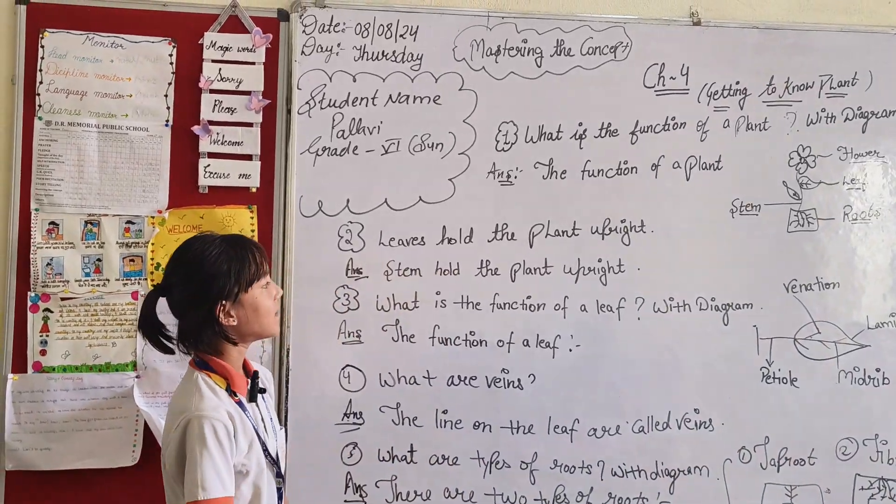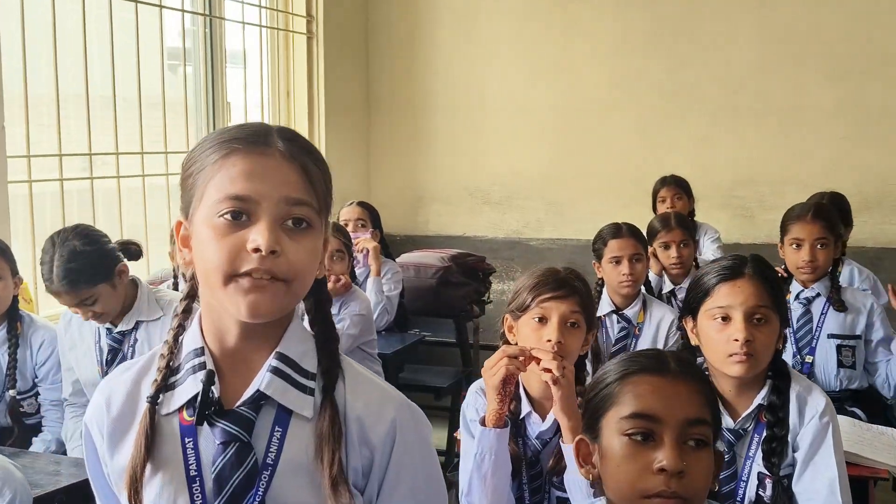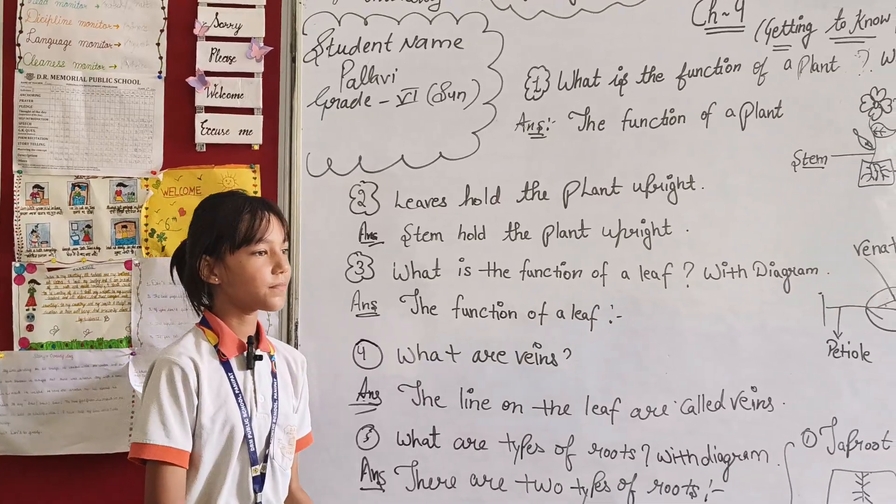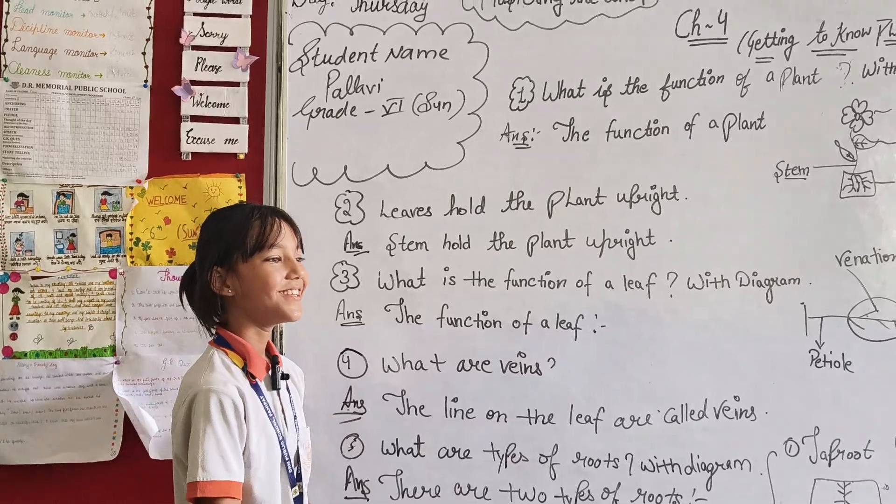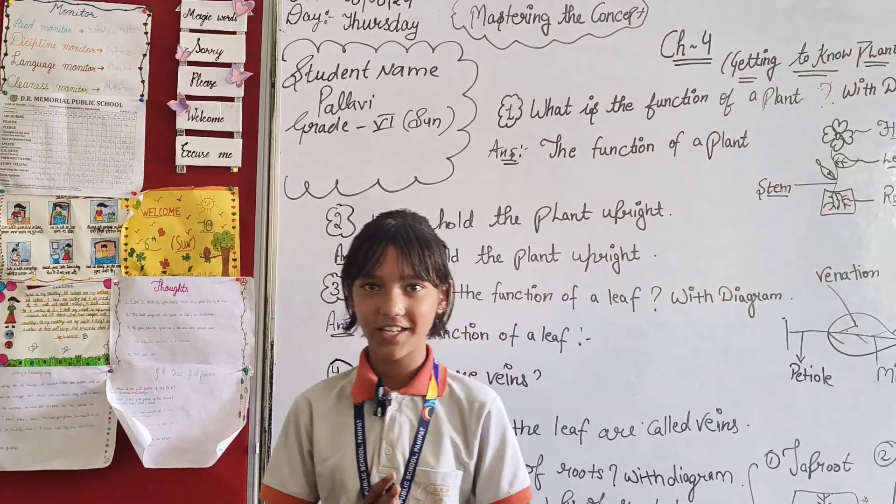Rishita sister, stand up. What is the function of a leaf with a diagram? The function of a leaf, veins, lamina, midrib, petiole. Rishita sister, right answer. Please sit down. Do you students understand? Thank you, very nice day.